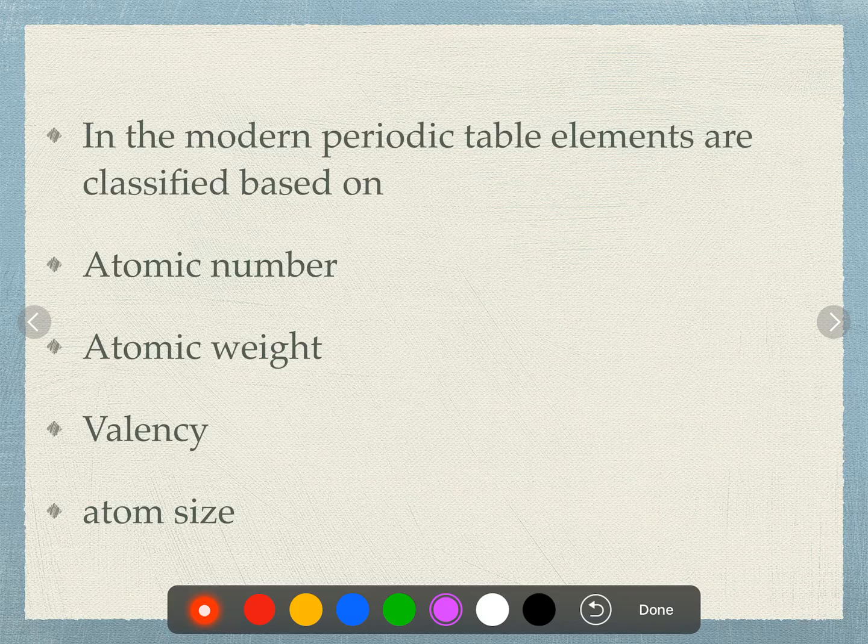In the modern periodic table, elements are classified based on: atomic number, atomic weight, valency, or atomicity? Elements are classified based on atomic number.